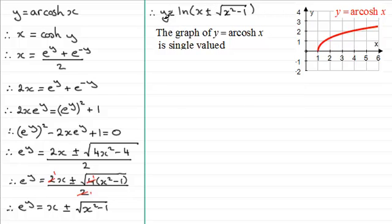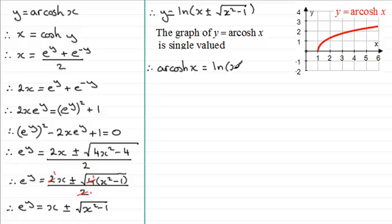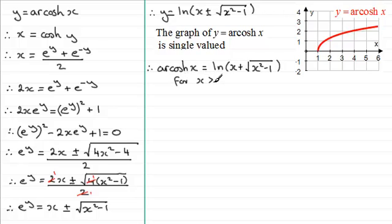For now it's this branch given by the positive value. Since y equals the inverse cosh of x, we have that the inverse cosh of x must be equal to the natural log of x plus the positive root of x squared minus 1. This is valid for x greater than or equal to 1.